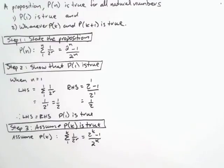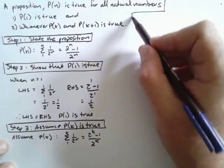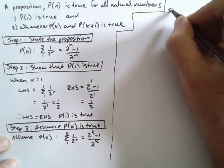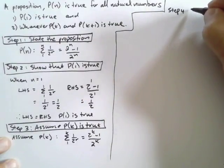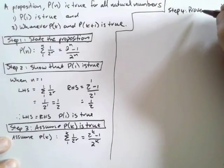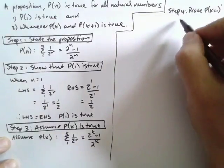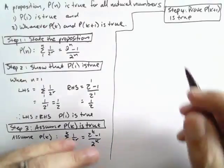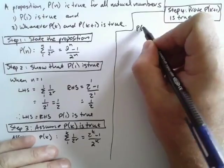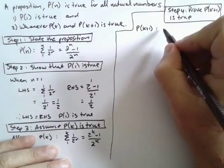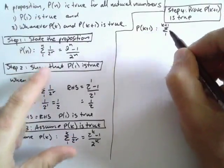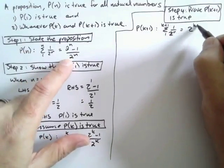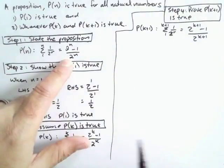Step 4 is the proof — prove that P(k+1) is true. I need to prove that P(k+1) is the sum from 1 to k+1 of 1 over 2^r equals 2^(k+1) minus 1 over 2^(k+1). That is what I have to prove. So I'm going to work with my left-hand side.